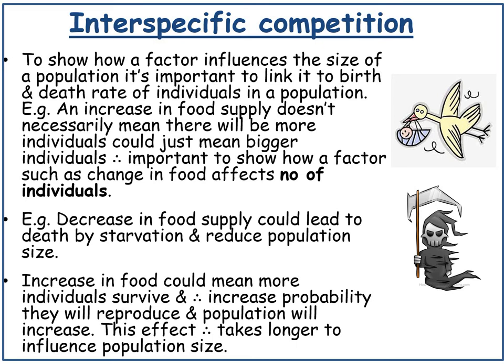To show how a factor influences population size, it's important to link it to the birth and death rate of individuals. For example, an increase in food supply doesn't necessarily mean more individuals — it could just mean bigger or faster individuals. A decrease in food supply could lead to death by starvation and reduce population size; an increase in food could mean more individuals survive and reproduce, increasing the population, though this effect takes longer to influence population size.